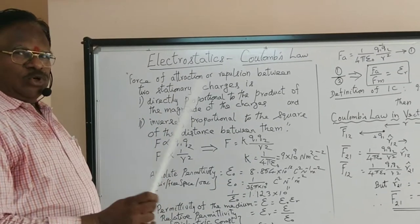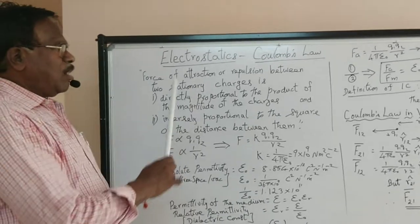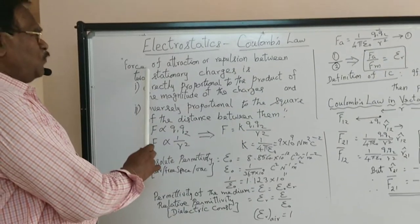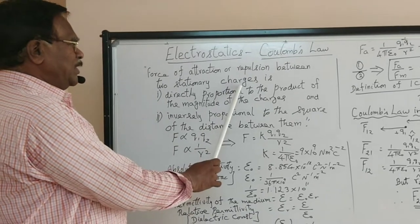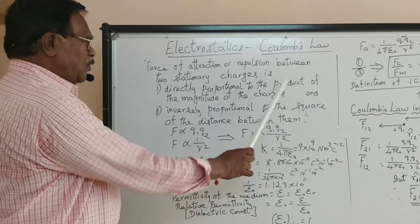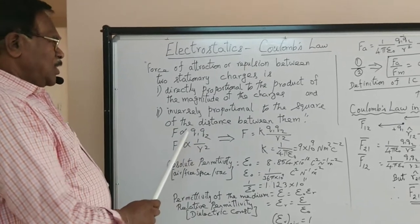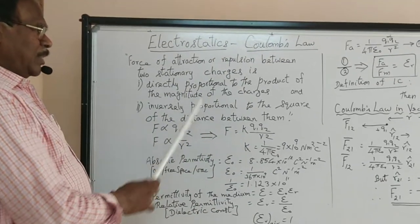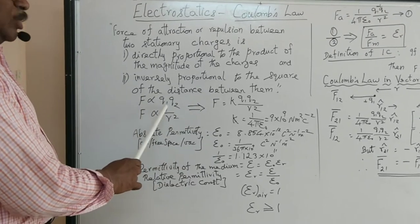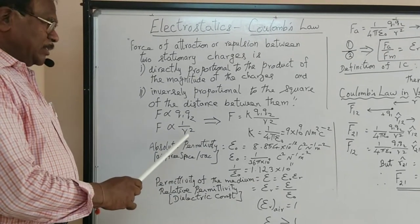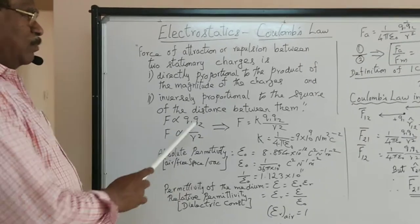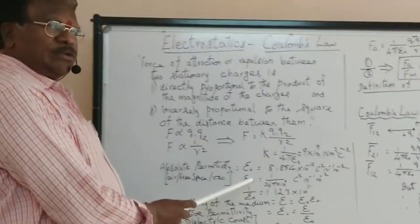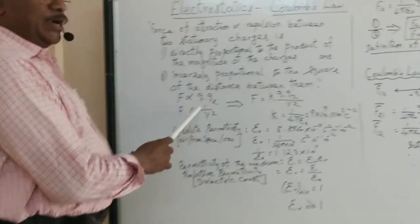If the charges are in motion or mobile, the law does not hold good. Only for stationary charges does the law hold good. The force of attraction or repulsion between two stationary charges is directly proportional to the product of the magnitude of the charges and inversely proportional to the square of the distance between them. Combining both, we get F proportional to q1·q2/r², and introducing a proportionality constant, F = k·q1·q2/r².